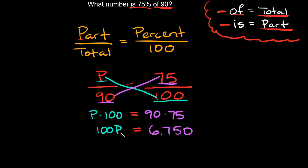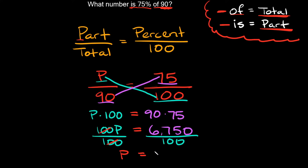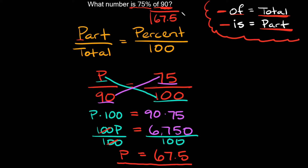We're trying to solve for P, so in order to isolate it we divide by 100 on both sides. The hundreds cancel out, so we're left with P equal to 6,750 divided by 100, which is 67.5. So your answer is P = 67.5 — meaning 75% of 90 is 67.5.